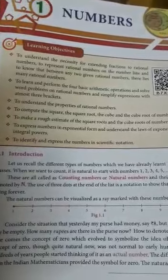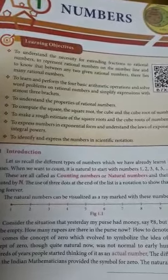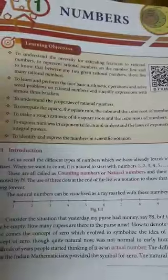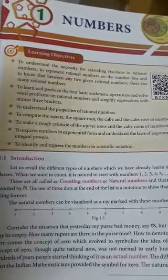Then whole numbers. Whole numbers means it includes 0, then 1, 2, 3 like that.